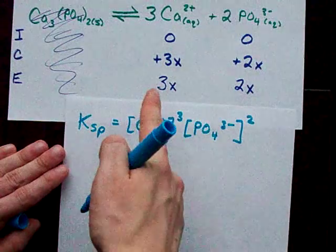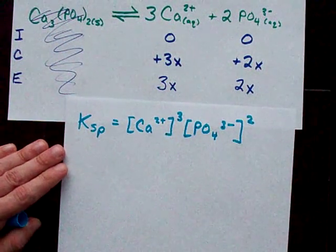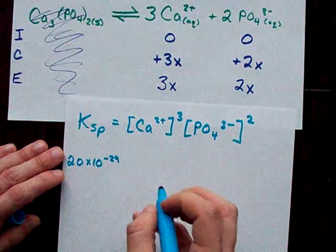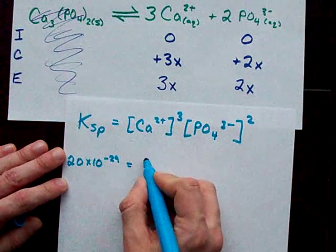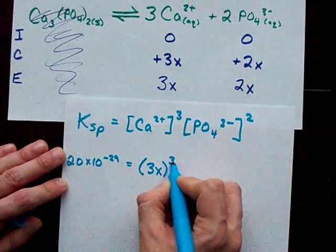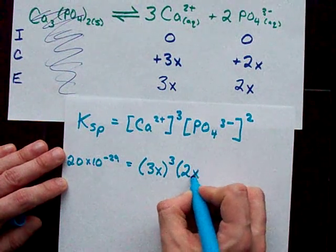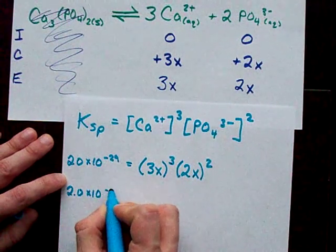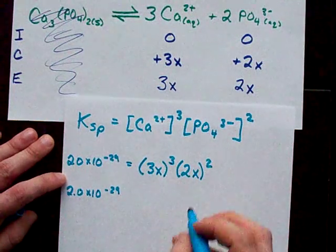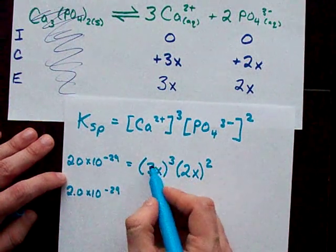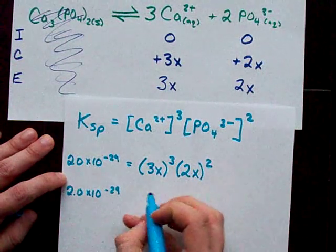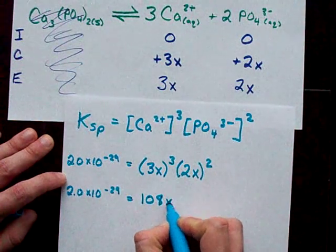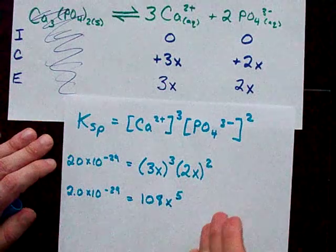Now we fill in what we know from the final row of our ICE table. The Ksp was given in the question, 2 times 10 to the minus 29. Our calcium concentration is 3x, that's cubed. And our phosphate concentration is 2x, that's squared. Let me just take a moment to simplify that for you. 3 cubed times 2 squared is 27 times 4, which is 108. x cubed times x squared is x to the 5. Ooh, look at this. Algebra's useful.